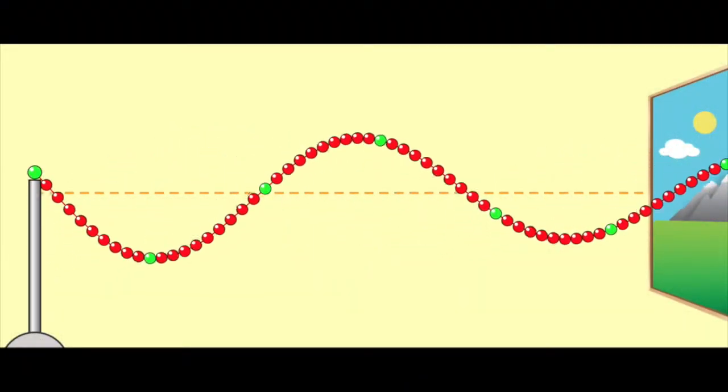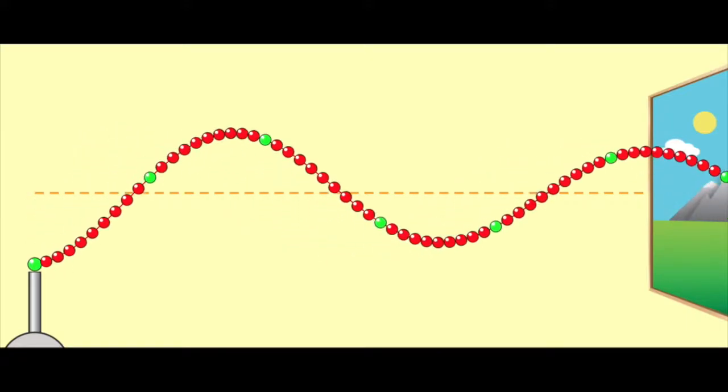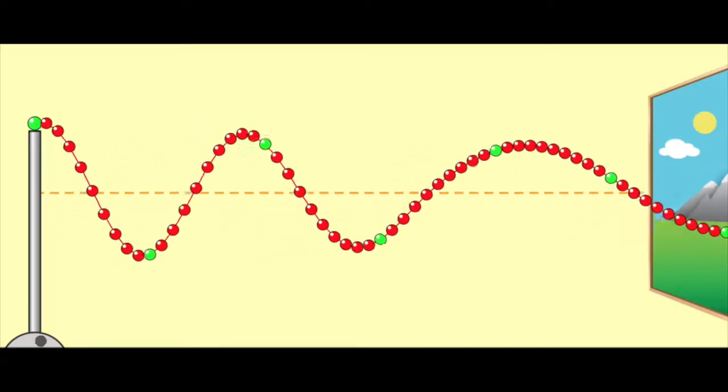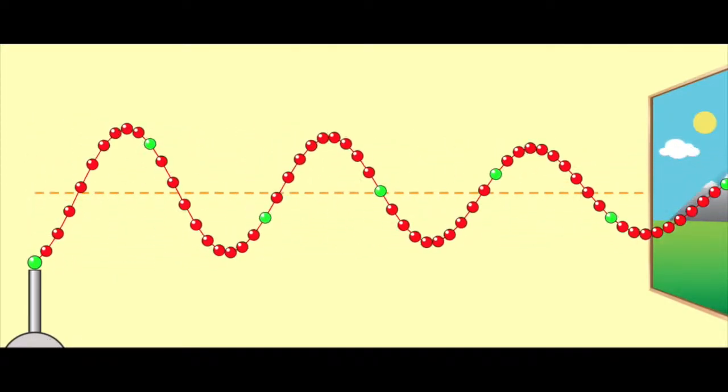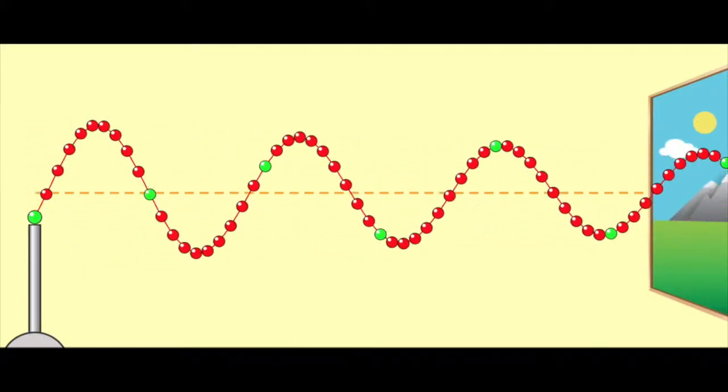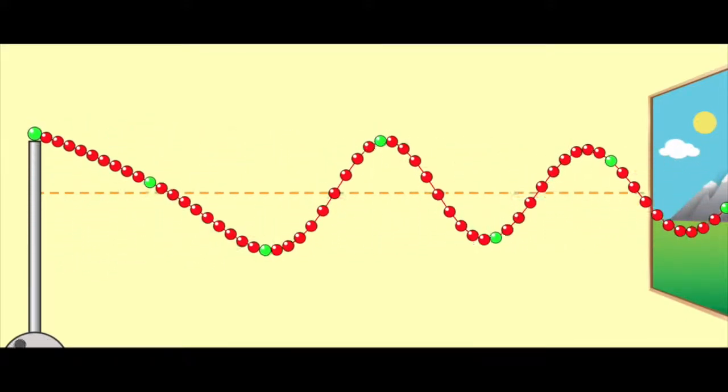In this demo, one end of a chain is repeatedly moved up and down, sending transverse waves down the rest of the chain. If the chain vibrates more often, then the repeating waves appear with greater frequency. If the chain vibrates less often, then the waves have a lower frequency.